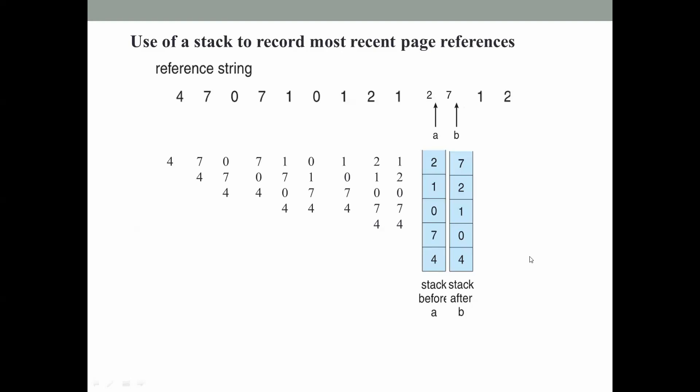When using a stack to record page references, the top always contains the most recently used page and the bottom always contains the least recently used page. Getting the least recently used page is easy with this method. However, the update operation - removing a page from the middle of the stack and pushing it to the top - is expensive. We use a doubly linked list with head and tail pointers to appropriately change element positions. This is the disadvantage of stack-based implementation.